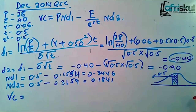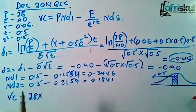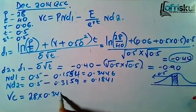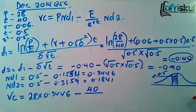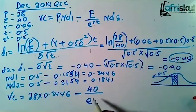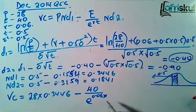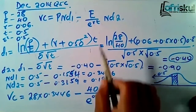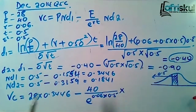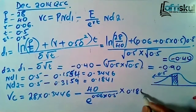Now with N(d1) and N(d2), we can get the value of the call. Going back to the formula: the market price per share is 28, multiplied by N(d1) which is 0.3446, then minus the exercise price which is 40, divided by e raised to the power of r times t — where r is 0.06 and t is 0.5 — then multiplied by N(d2) which is 0.1841.